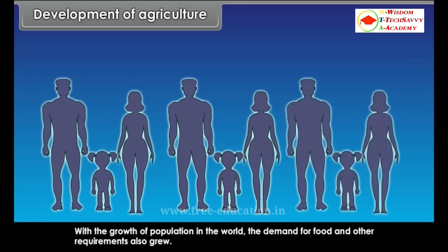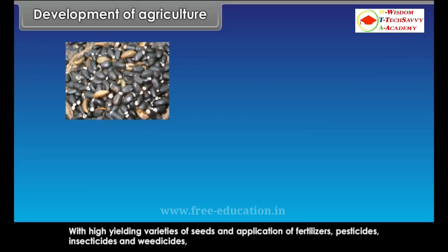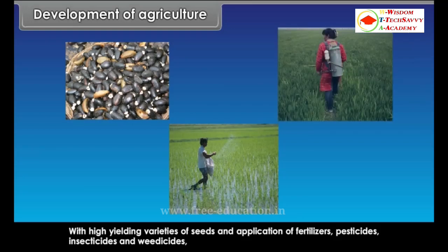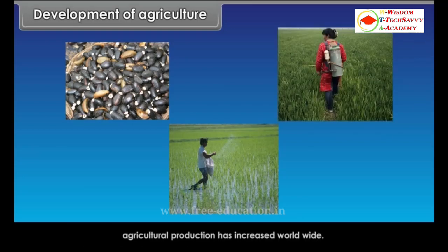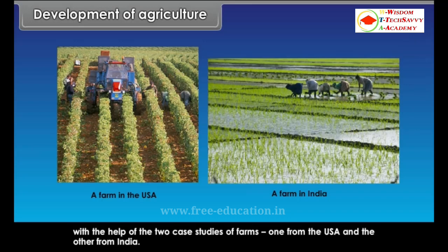With the growth of population in the world, the demand for food and other requirements also grew. With high yielding varieties of seeds and application of fertilizers, pesticides, insecticides and weedicides, agricultural production has increased worldwide. We can compare the agricultural development of developed and developing countries with the help of two case studies — one farm from the USA and the other from India.